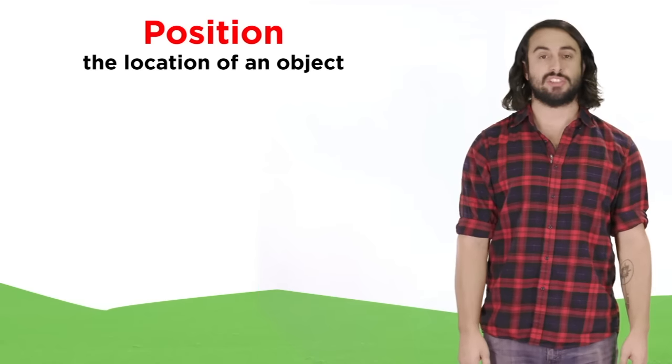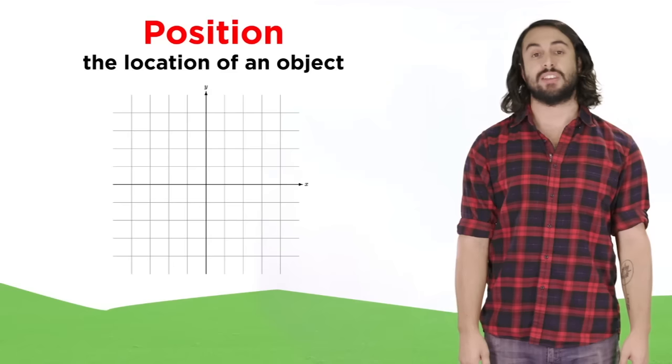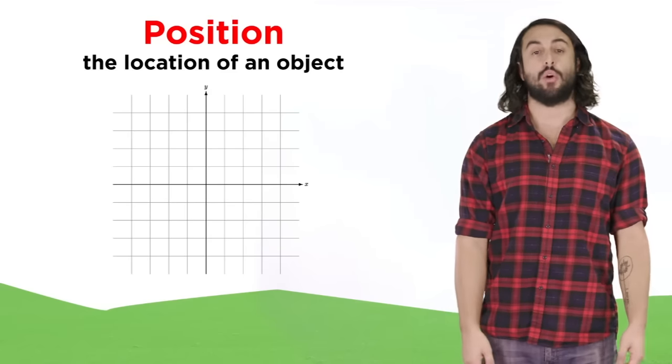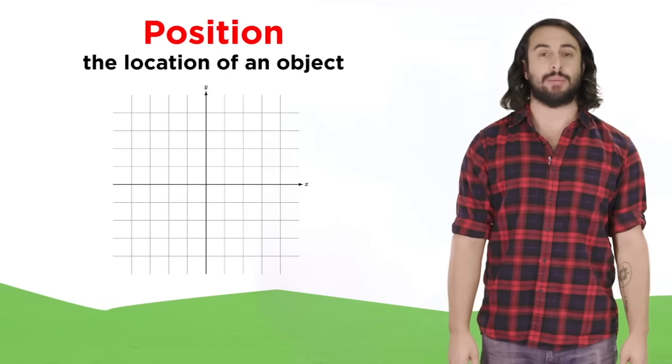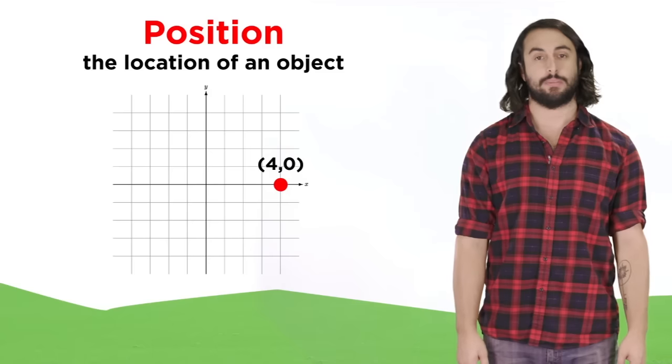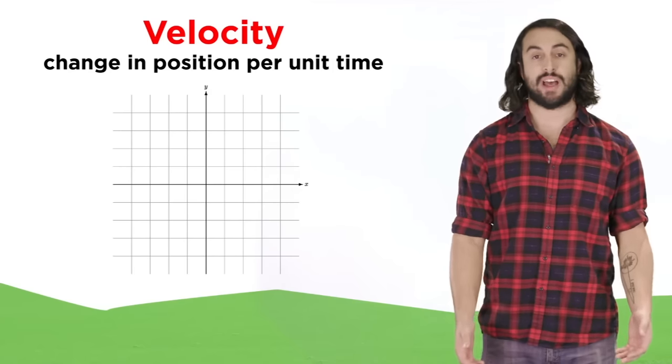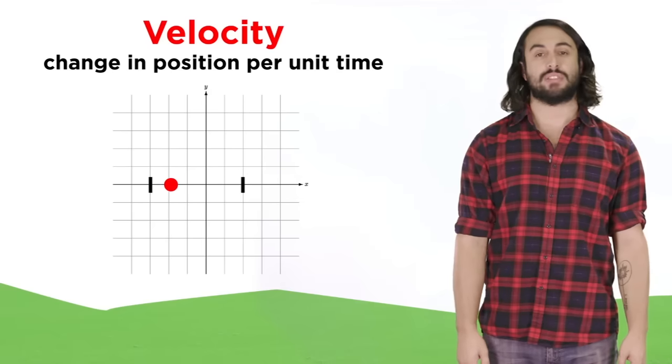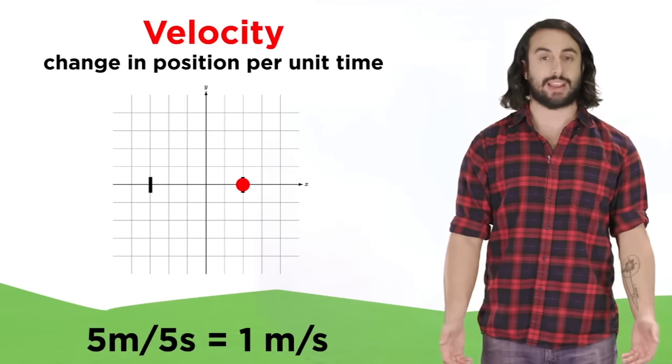Position is simple, it's just where an object is in space. Usually this is discussed with some kind of reference point or axes in mind, and we might express the position of an object as being some distance from this reference point in meters. Velocity is the change in position over time, so if this object travels five meters in five seconds, it is traveling at a velocity of one meter per second.